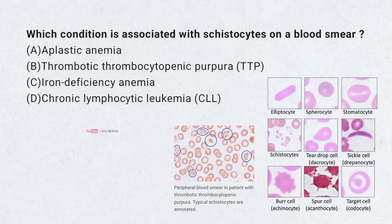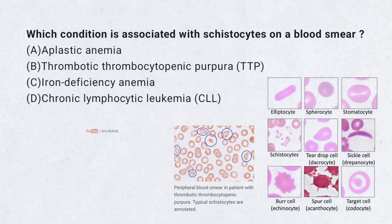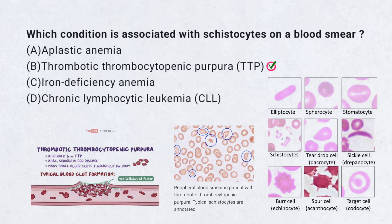Which condition is associated with schistocytes on a blood smear? A. Aplastic anemia, B. Thrombotic thrombocytopenic purpura (TTP), C. Iron deficiency anemia, D. Chronic lymphocytic leukemia (CLL). Correct answer: B. TTP. Schistocytes are fragmented RBCs seen in TTP due to mechanical damage from microthrombi.